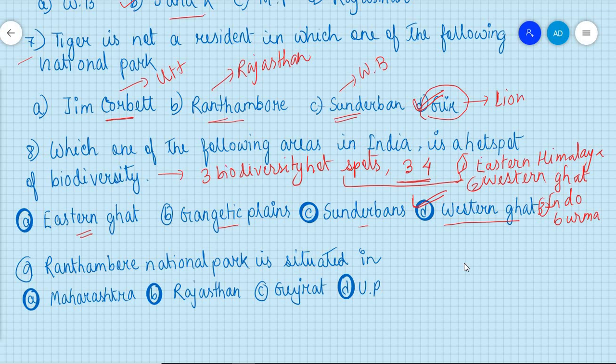The last question: Ranthambore National Park is situated in — as already mentioned, Ranthambore National Park is situated in Rajasthan and it is famous for tiger. The questions discussed here are related mainly to national parks and wildlife sanctuaries.